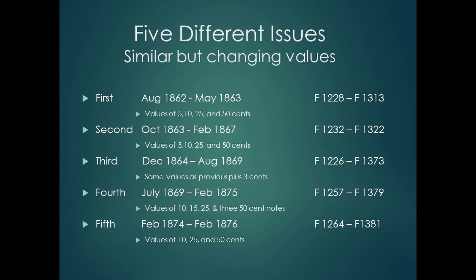In 1953, Robert Friedberg developed a system to identify all the issues and varieties of U.S. currency, including fractional. The numbers shown on the right-hand side as F with various numbers are the standard now to identify currency. Since there are so many varieties of fractional notes, it would be good to learn more about this system before collecting the notes, because the numbers are not fully consecutive within each issue, and there is some overlap from issue to issue. See the guidebook of U.S. paper money for more information.